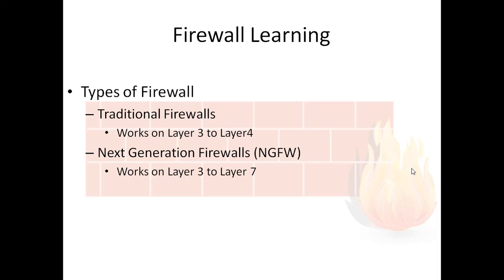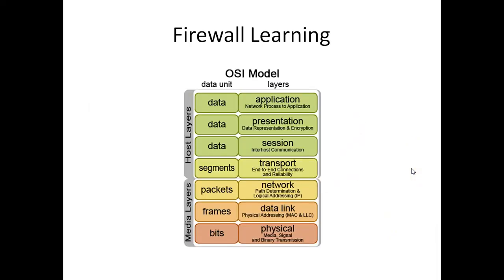If you remember the OSI model, there are seven layers starting from the physical layer as layer 1, then layer 2 is data link, then network, then transport, then session, then presentation, and application. Normally, the traditional firewall works in between the network layer and transport layer.